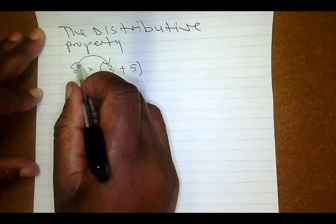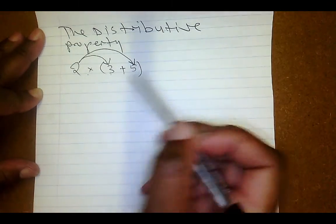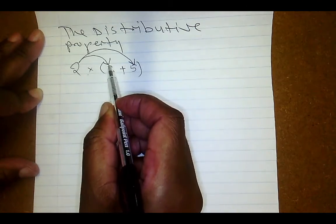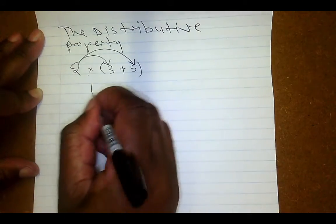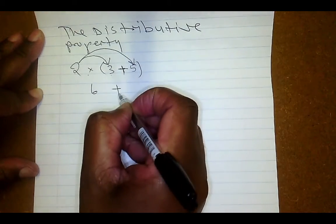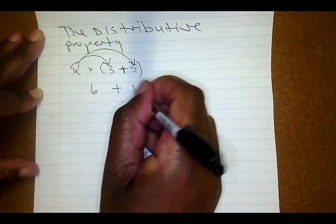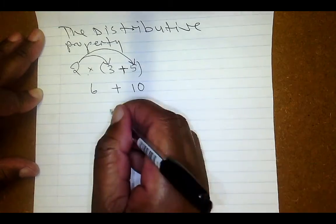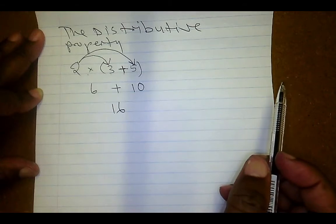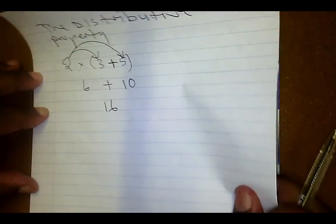We take the 2 and multiply it by 3, then take the 2 and multiply it by 5 — we are distributing the 2. So 2 multiplied by 3 gives 6, then that plus sign should be carried down, then 2 multiplied by 5 gives 10, and the answer is 16. That process is called distribution.